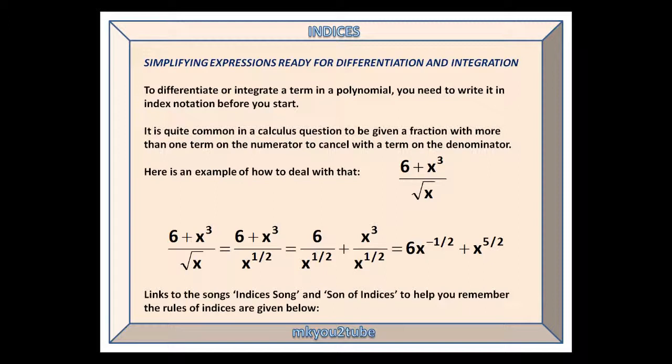Here is an example of how to deal with that. We have (6 + x^3)/√x. The square root of x is, of course, x^(1/2). We can then split the fraction up into separate fractions, each with a denominator of x^(1/2). 6/x^(1/2) = 6x^(-1/2). To divide x^3 by x^(1/2), we subtract the indices and get x^(5/2).